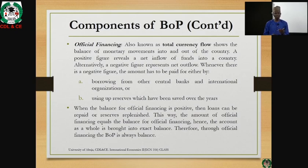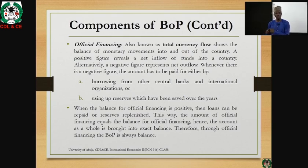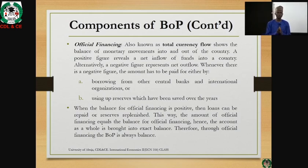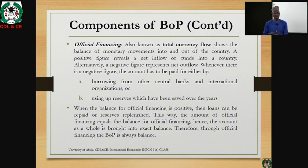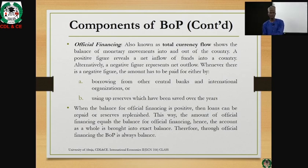Whenever there is a positive balance in official financing — that is, whenever there is excess — the country removes from this excess to replace its foreign reserves or pays back loans it collected. This is how official financing tends to balance the balance of payments. In essence, the balance of payments at the end of the year must be balanced, and it is balanced through official financing.